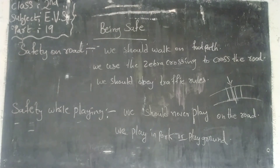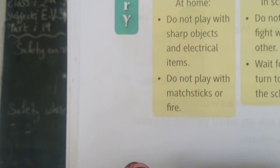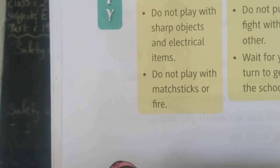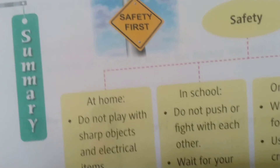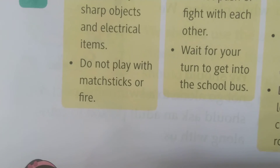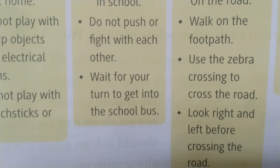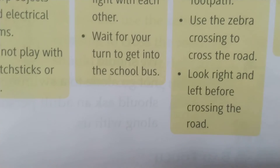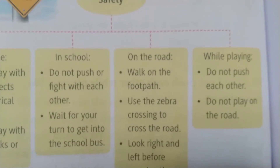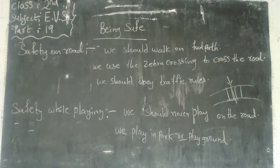Now the summary of the lesson on safety: At home, do not play with sharp objects, electric items, or matchsticks. In school, do not push or fight, and wait your turn to get into the school bus. On the road, walk on the footpath, use zebra crossing, look right and left before crossing. While playing, do not push each other and do not play on roads.